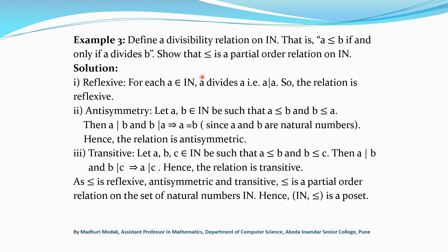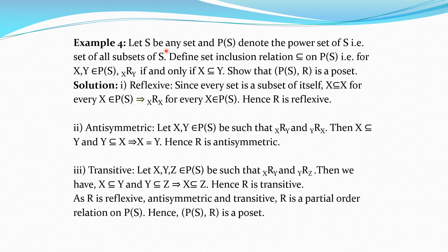This is a very important relation which we will use in further examples. One more example: let S be any set and P(S) denote the power set of S, that is, the set of all subsets of S. Define the set inclusion relation on P(S): for X, Y in P(S), X is related to Y if and only if X is a subset of Y. We check for reflexivity, antisymmetry and transitivity.